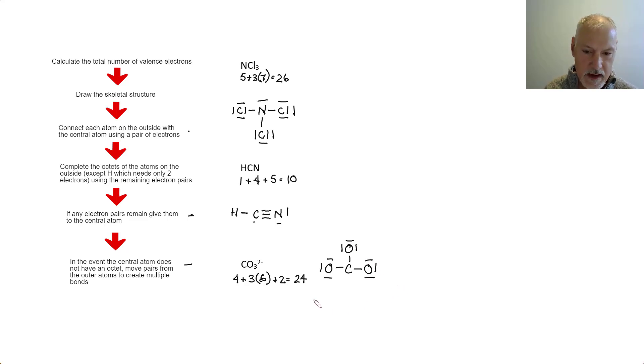Let's go on now and complete the octets of those on the outside. And at this point, I've used up all 24 electrons so much as I did in the last case. I'm going to have to move a pair to that central carbon. So let's say I'll move that pair in. That's it. Now, because this is an ion, I do need to put it in square brackets and indicate its charge.